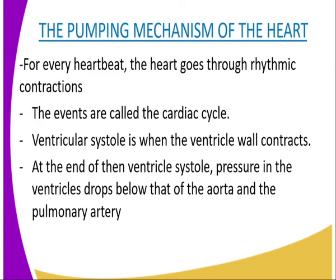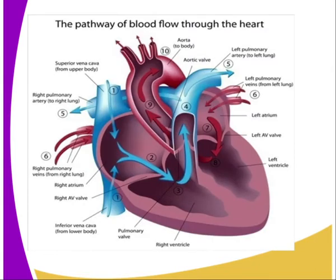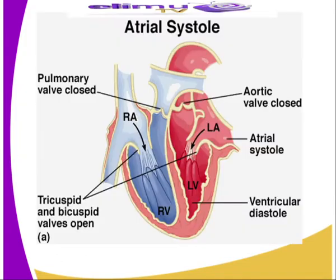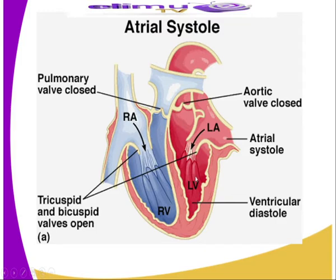The diastole is then followed by the atrial systole, whereby the atrial systole means the contraction of the atria or the auricles. In our diagram, we can see the atrial systole, whereby the pulmonary valve has closed while the tricuspid and the bicuspid valves are opened. This is to allow blood to flow into the ventricles. The aortic and the pulmonary valves close so that blood will not flow back, but the atria contract to push blood to the ventricles.